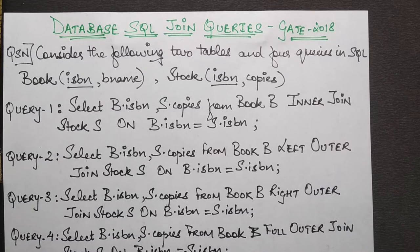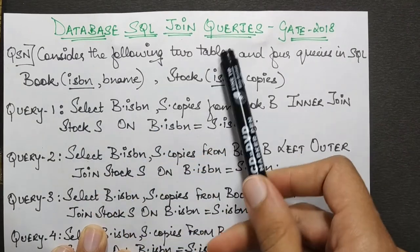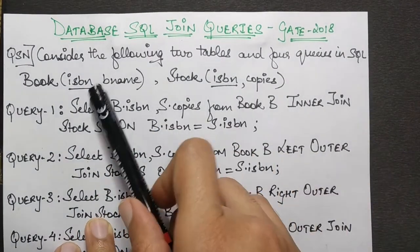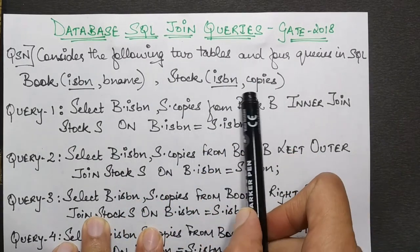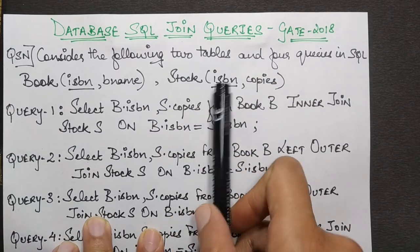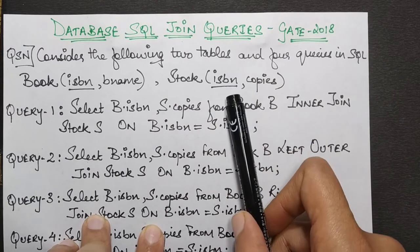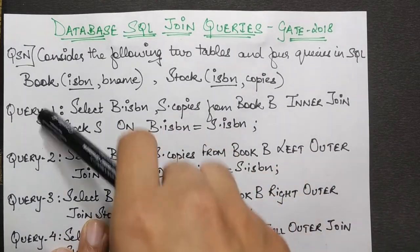The first statement of the question states that there are two schemas given. There are two schemas: a book schema and a stock schema. Both of them have ISBN as the primary key, then we have B name which might be a book name, and copies which represents the copies with respect to this ISBN value.